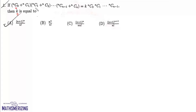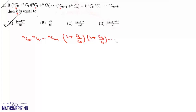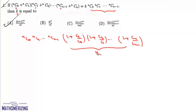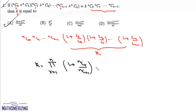On the left hand side we take NC0 NC1 NC2 up to NCN common, then we can write NC0 into NC1 NCN minus 1, and here will be 1 plus C1 upon C0, 1 plus C2 upon C1, and 1 plus CN upon CN minus 1. Comparing with the right hand side, this is K, which we write as the product where R varies from 1 to N of 1 plus NCR upon NCR minus 1.